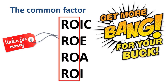In summary, ROIC, ROE, ROA, and ROI are similar metrics helping you to analyze whether an investment brings value for money. You can choose which financial metric to use for a specific situation, as each metric has a situation where it provides the most relevant perspective. Remember, financial analysis is as much an art as it is a science!